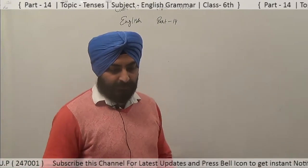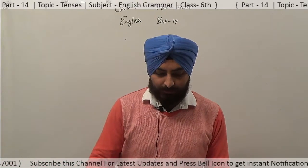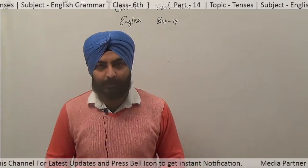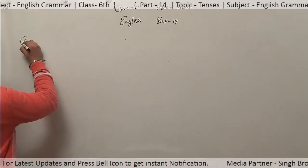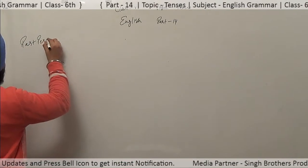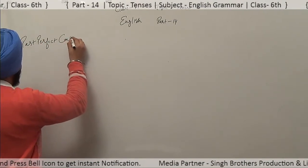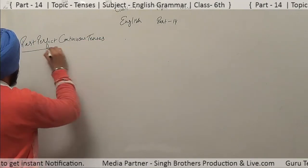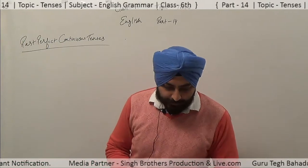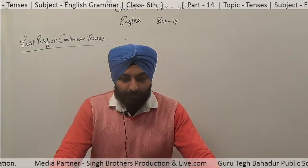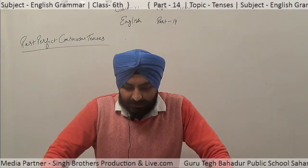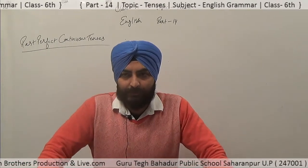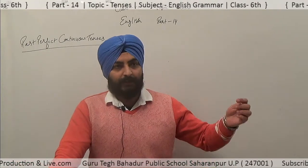Good morning students. In class 6 we were discussing past perfect tenses. So today we will start past perfect continuous tenses. Basically, in past perfect continuous tenses, the tense is used to express an action that began before a certain point or period in the past and continued up to some time — it was still running.